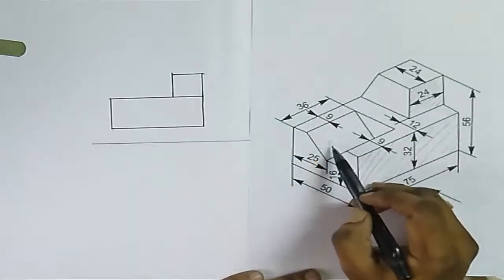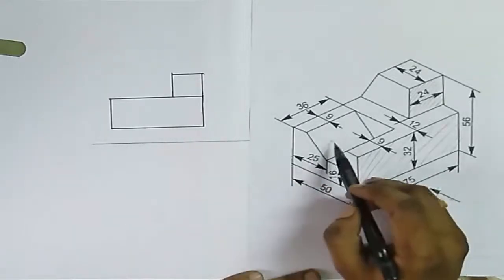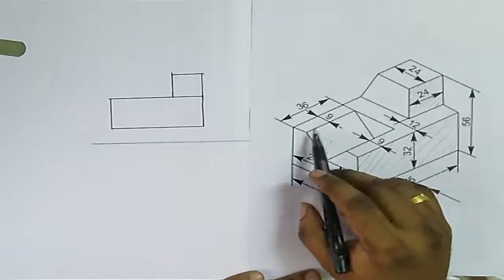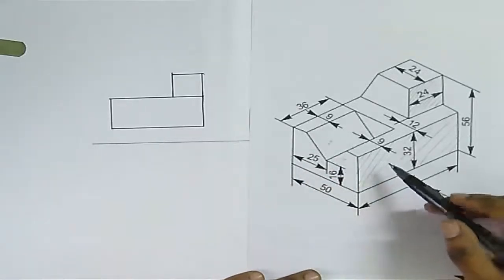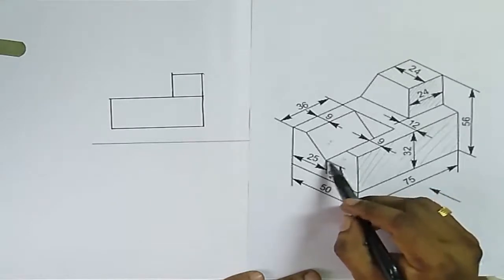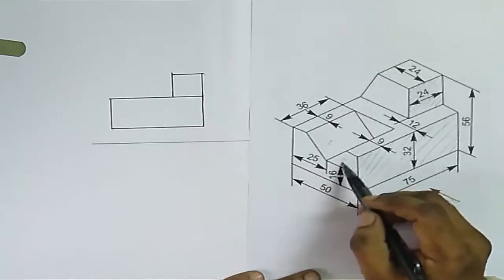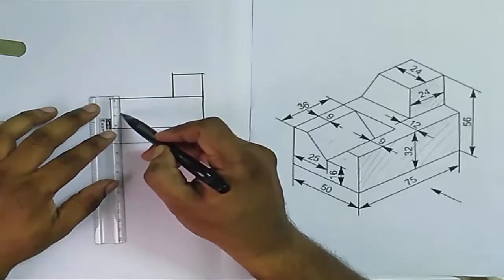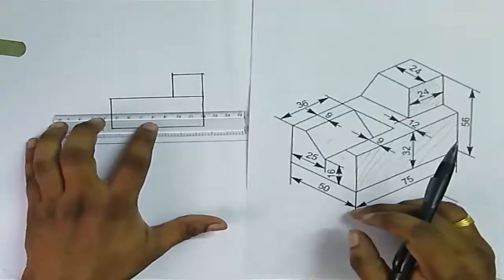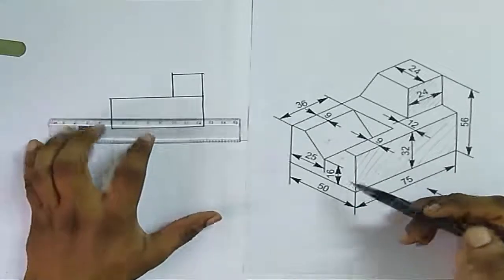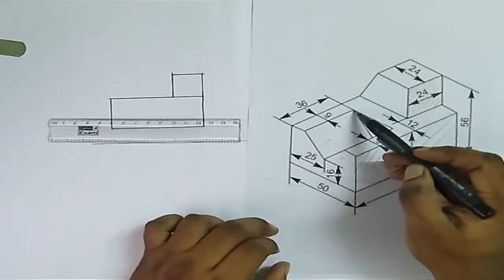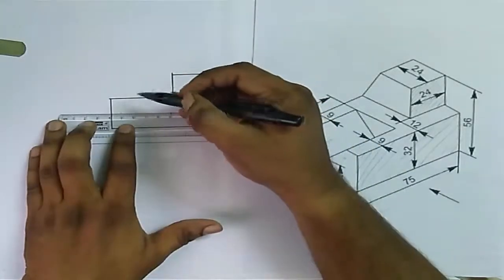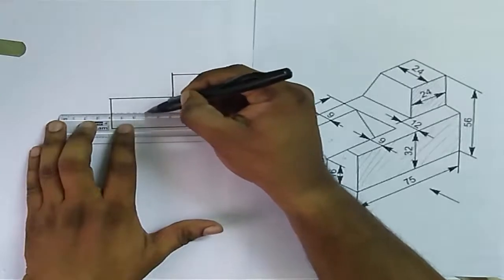Now this V has to be shown in the front view. Since there is a smaller material in this view, this V has to be shown. When you view from this direction, this edge will be visible — this edge is 16 mm from the top. From this point, this is 16 mm, and from that point draw a horizontal line to a length of 36 mm. From this edge it will be 36 mm, so from here to a length of 36 mm — it will be at 66 mm. So the V is shown like this in the front view.